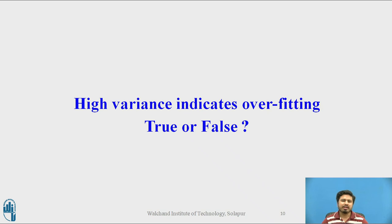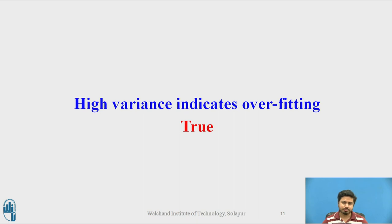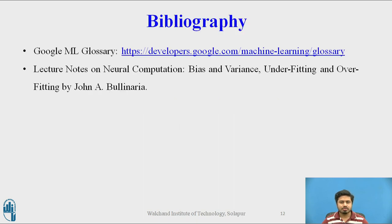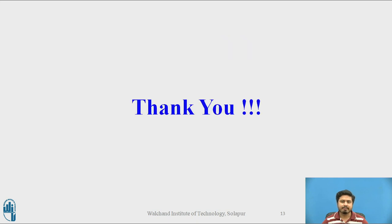As a quick reflection, you can pause and try to answer: high variance indicates overfitting — true or false? The answer is true. The bibliography for this session includes the Google ML Glossary. Thank you, that's it for this video.